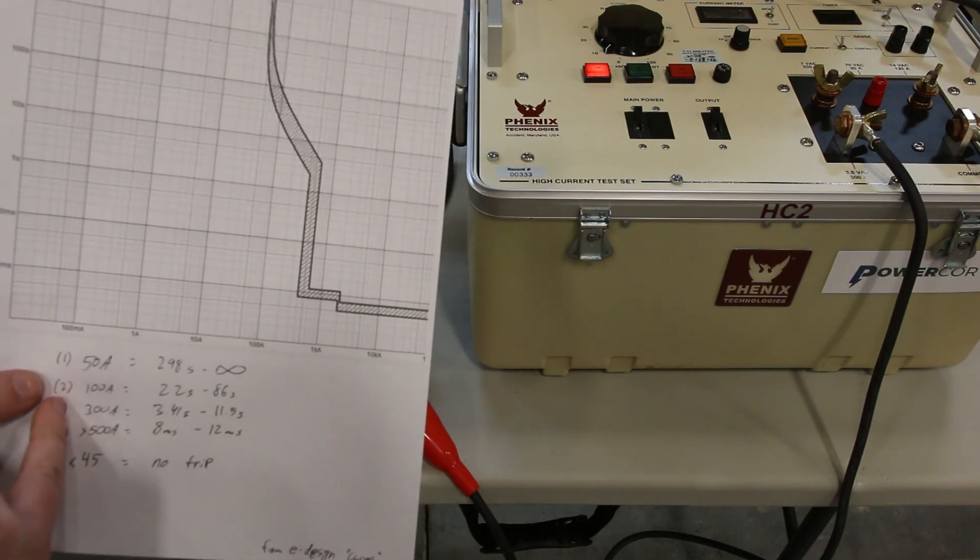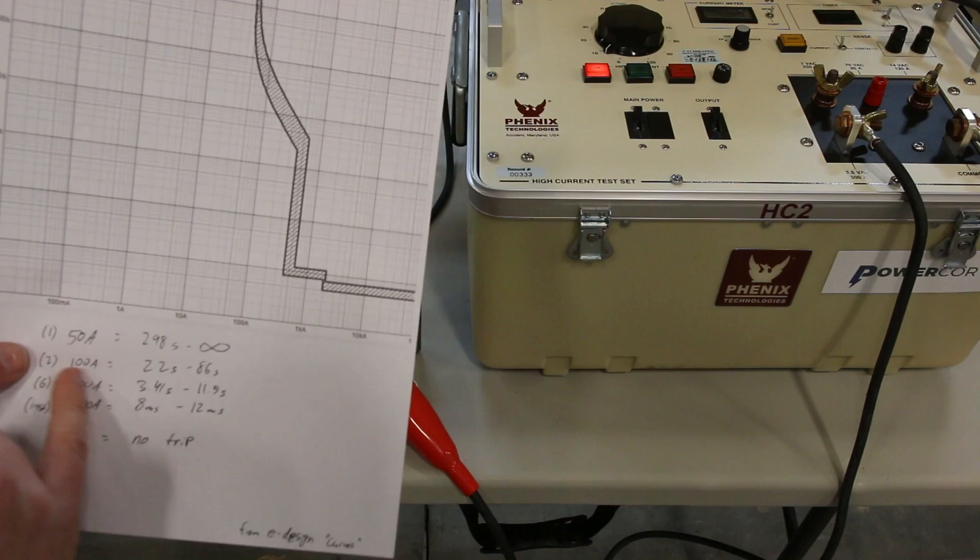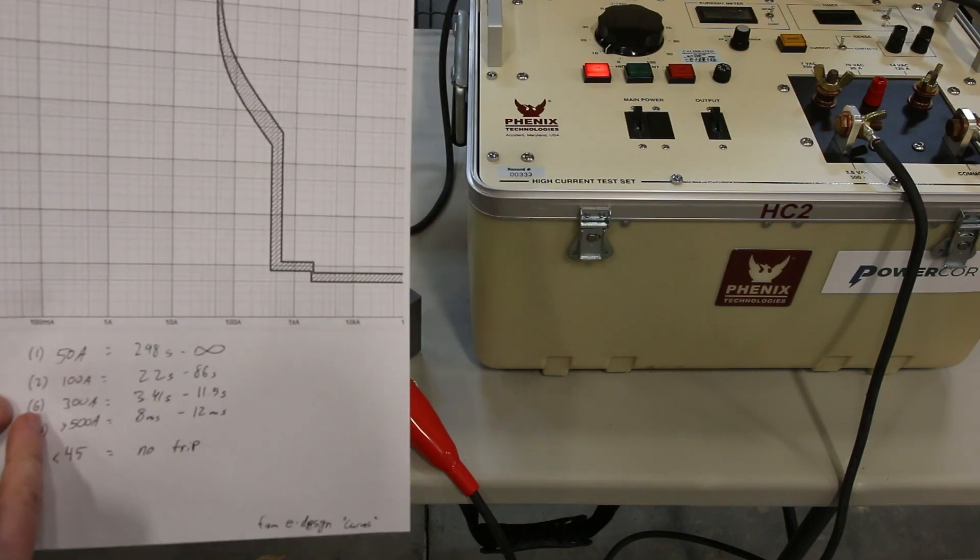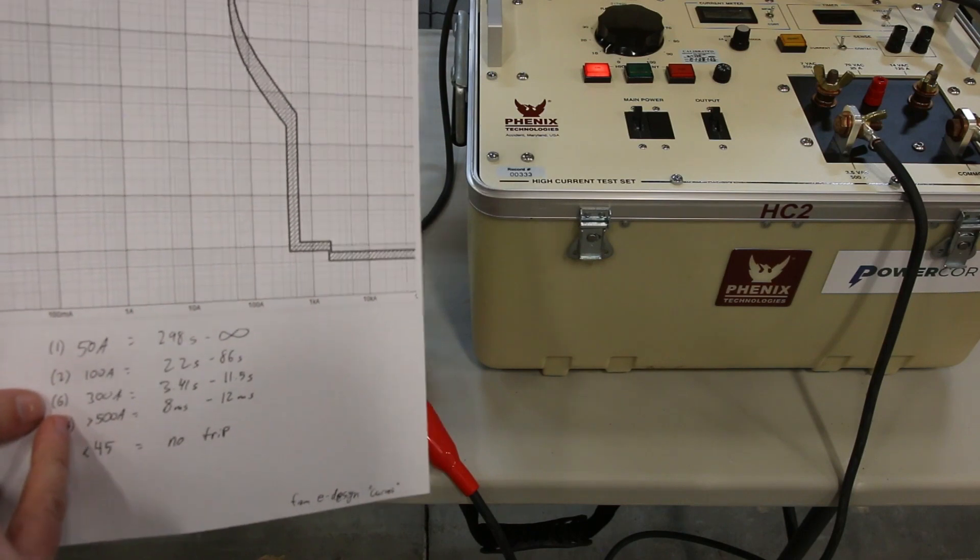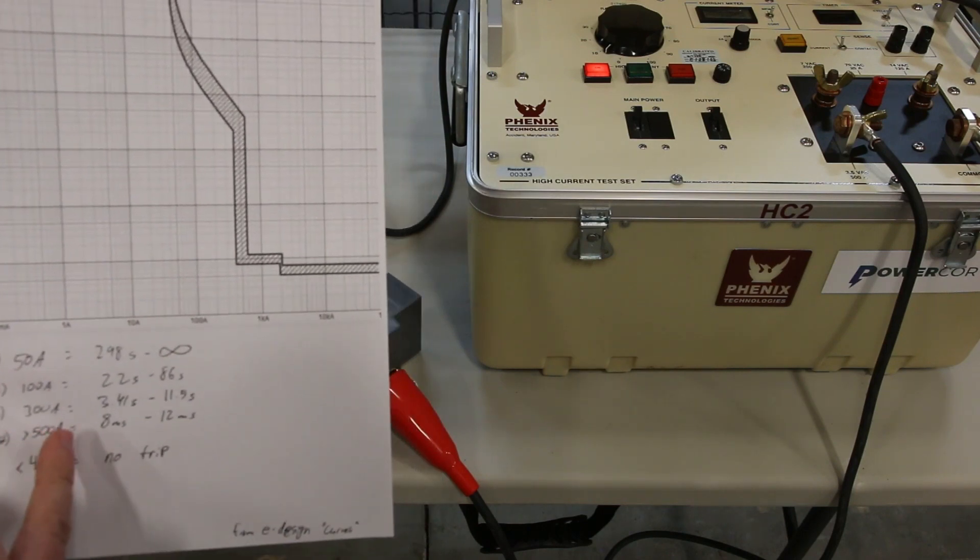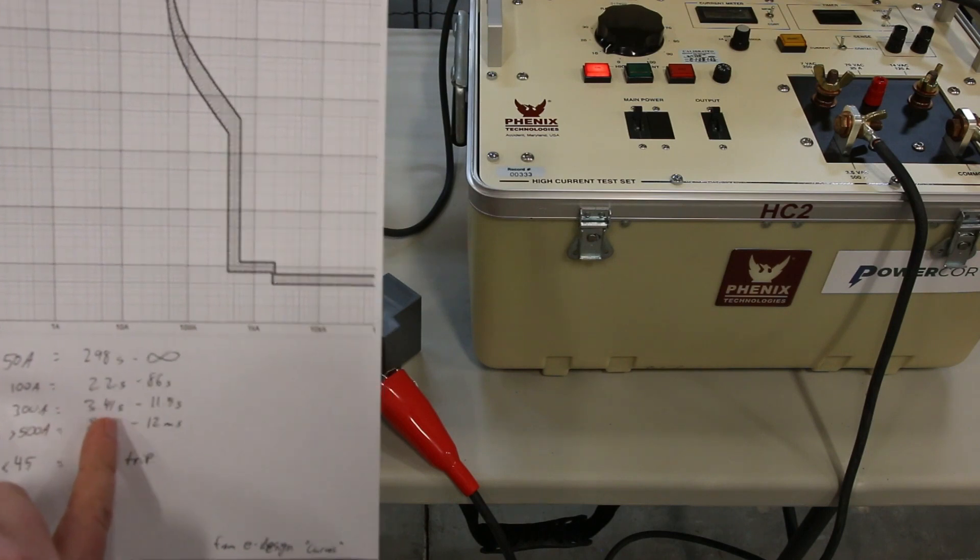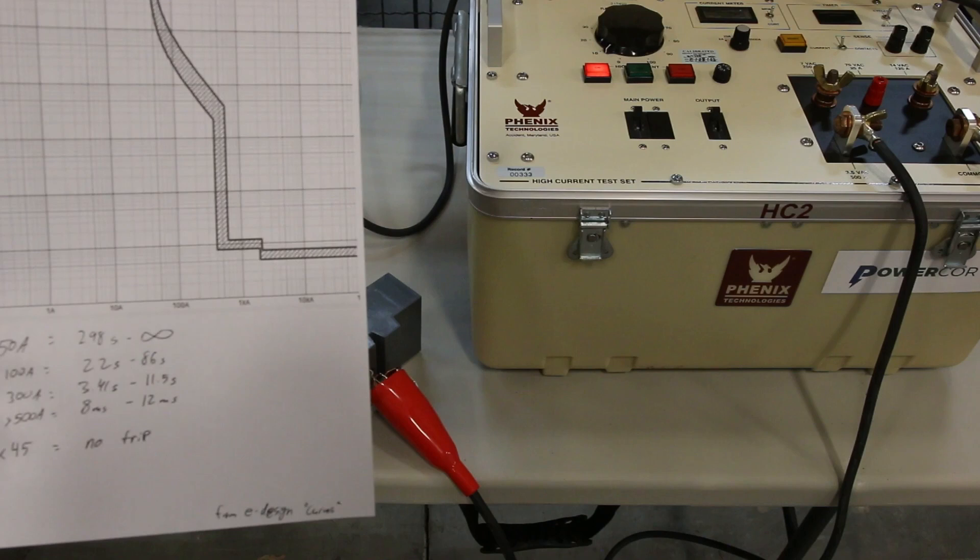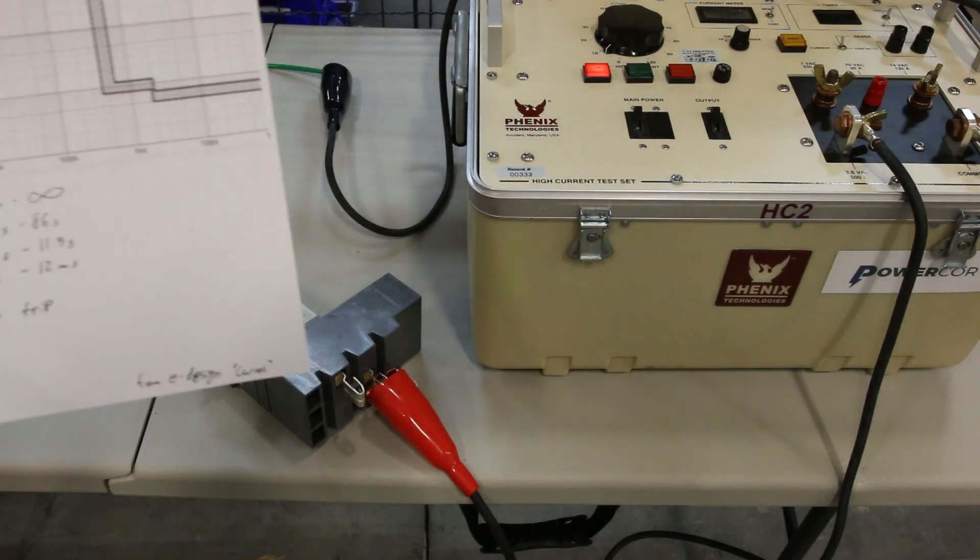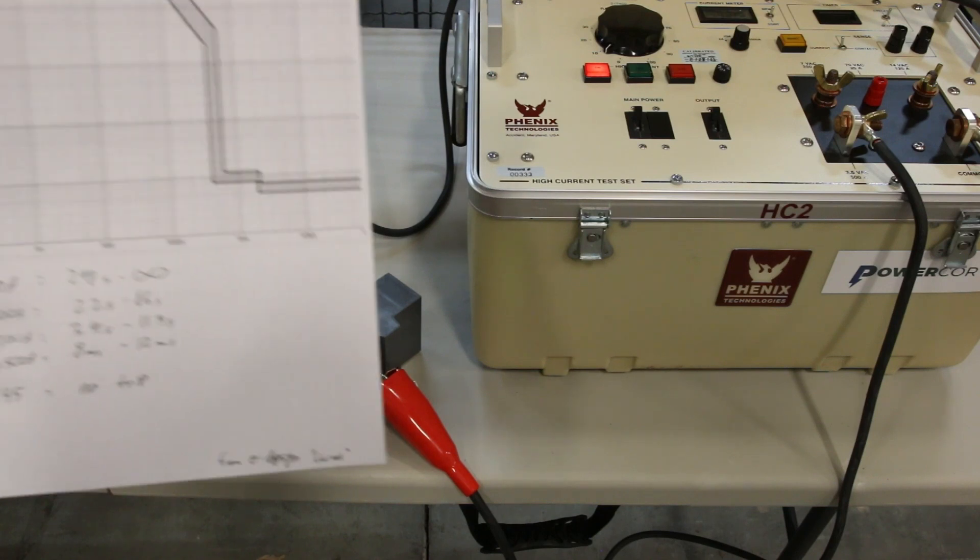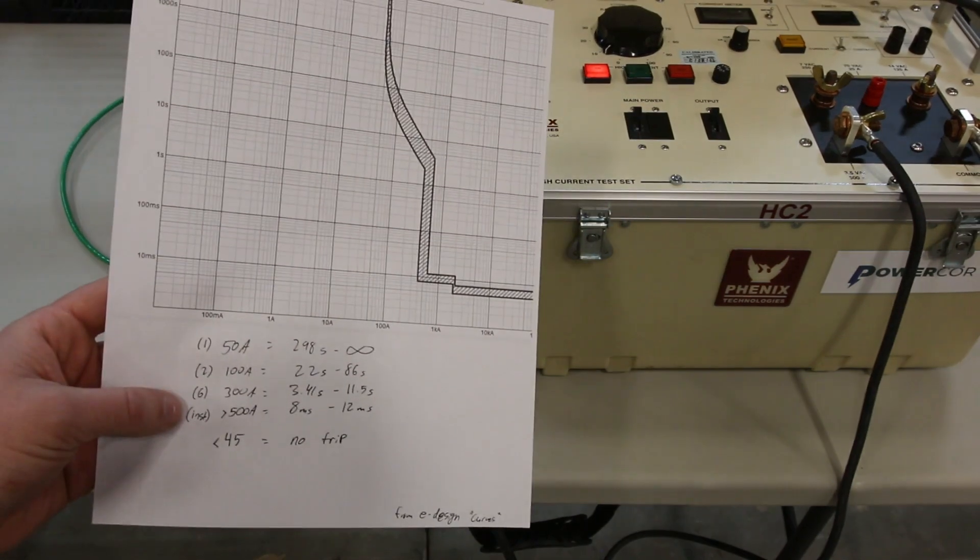At about two times my full load, at 100 amps, it should trip between 22 and 86 seconds. At six times, which is where you'd normally test it for like an NETA test, that would be 300 amps. It should trip between 3.4 and 11.5 seconds. And the instant pickup, which on this one is 10 times, at the instant pickup, it should trip between 8 milliseconds to 12 milliseconds. We're not going to test that because I don't think that has any bearing on what we're actually doing here.